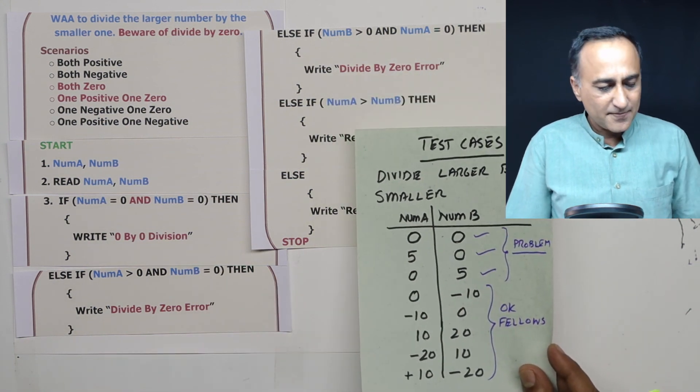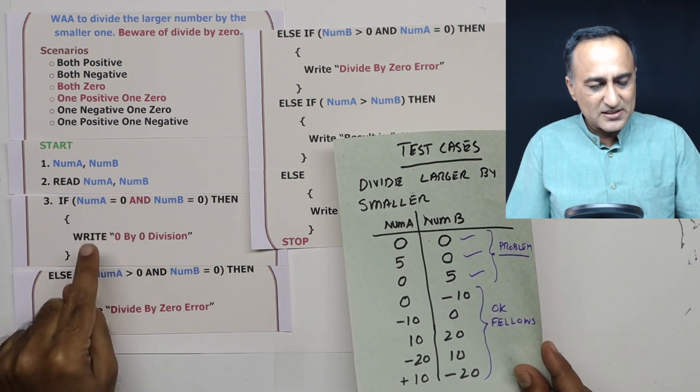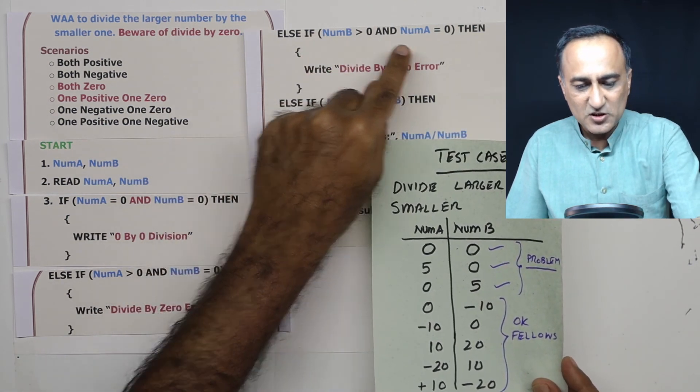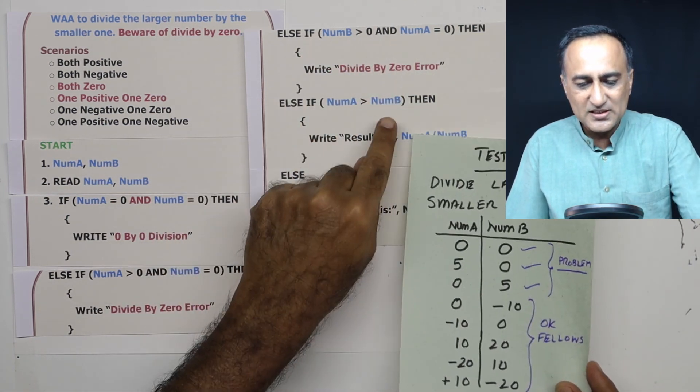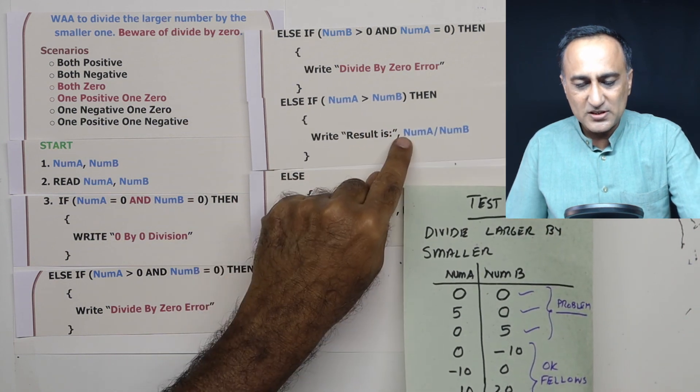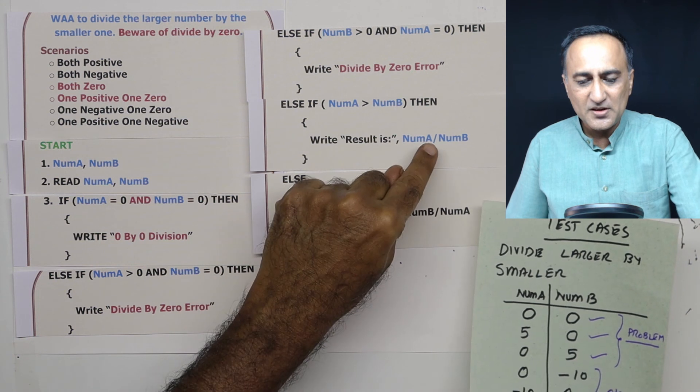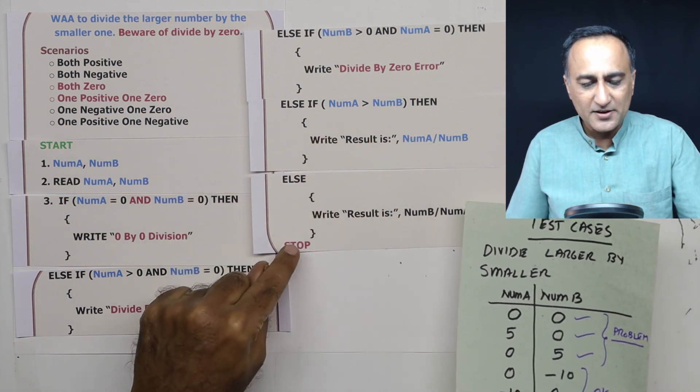Now 0 and minus 10. 0, minus 10. This condition is false. This is false. This is also false. 0 is greater than minus 10. So result is going to be 0 upon minus 10 which is going to be 0, print 0 and then it's going to stop.